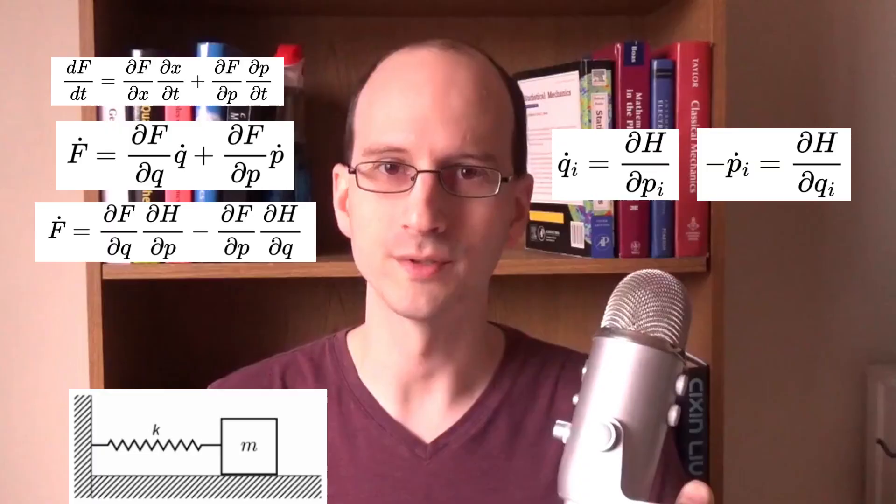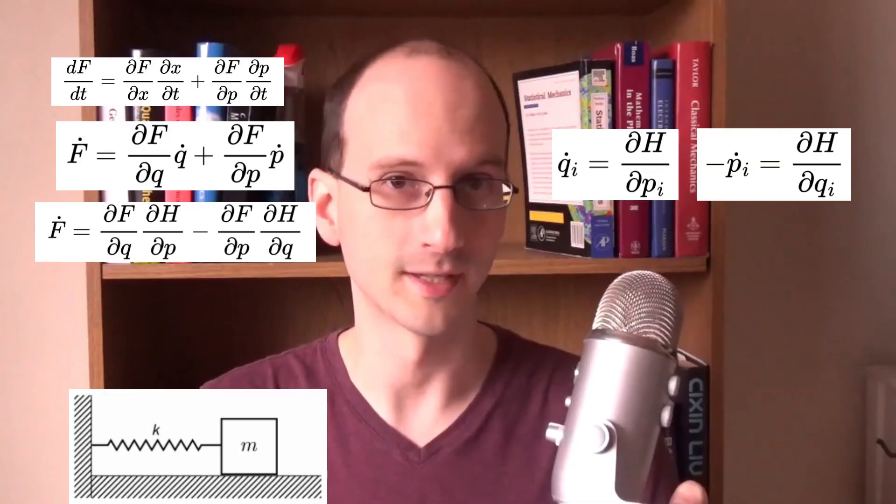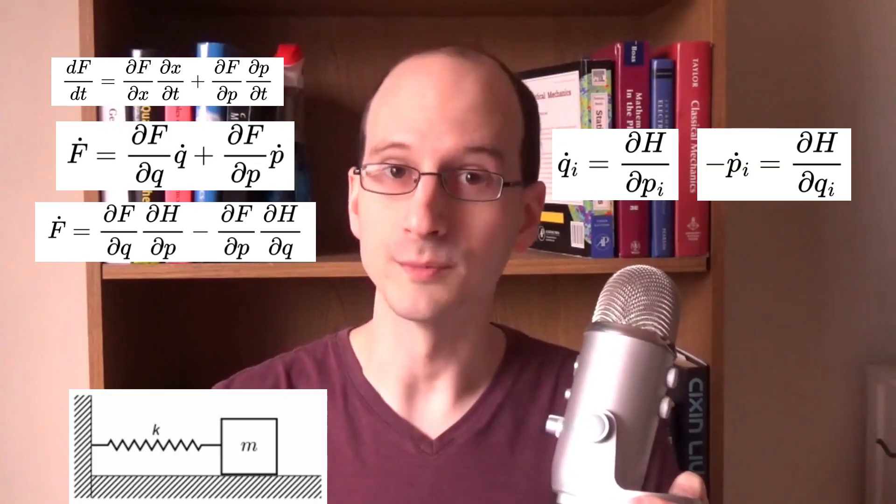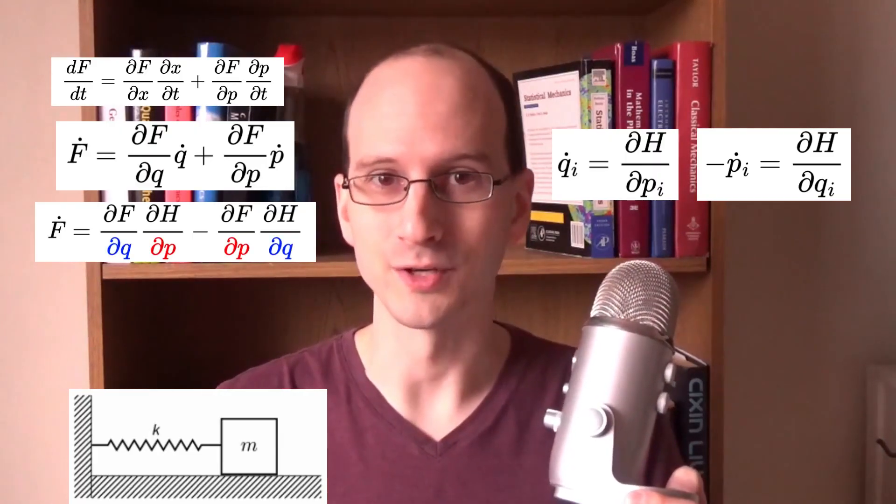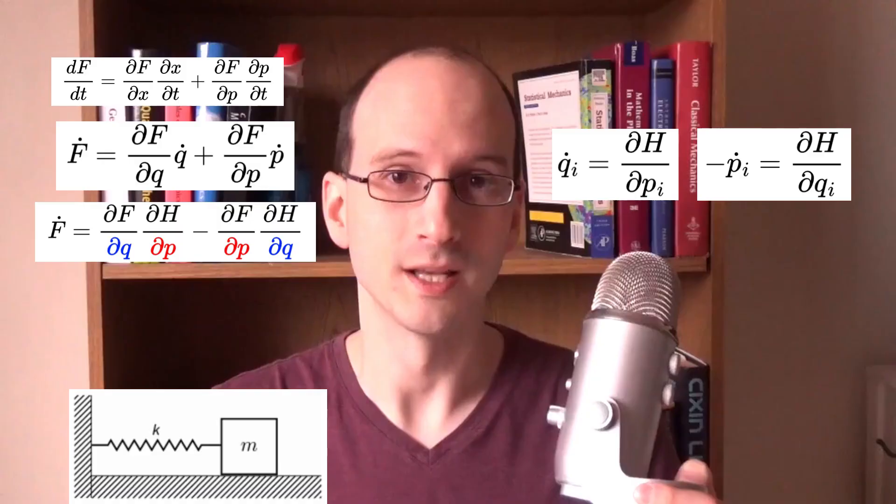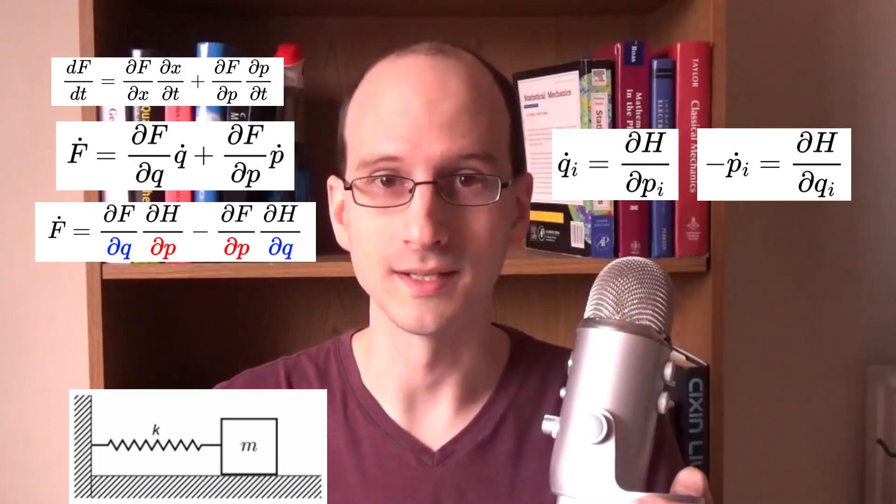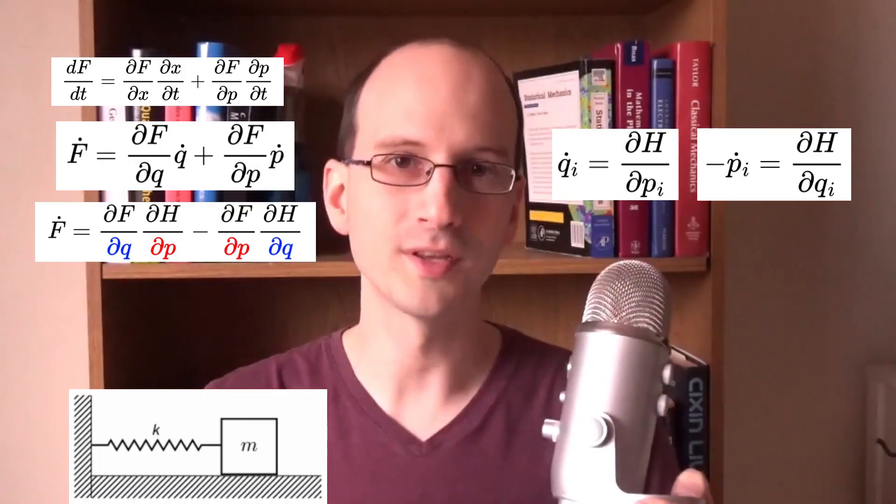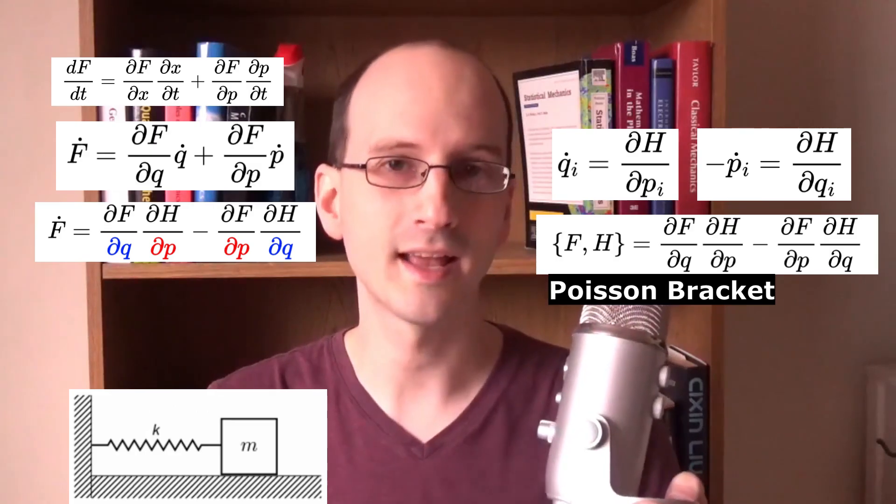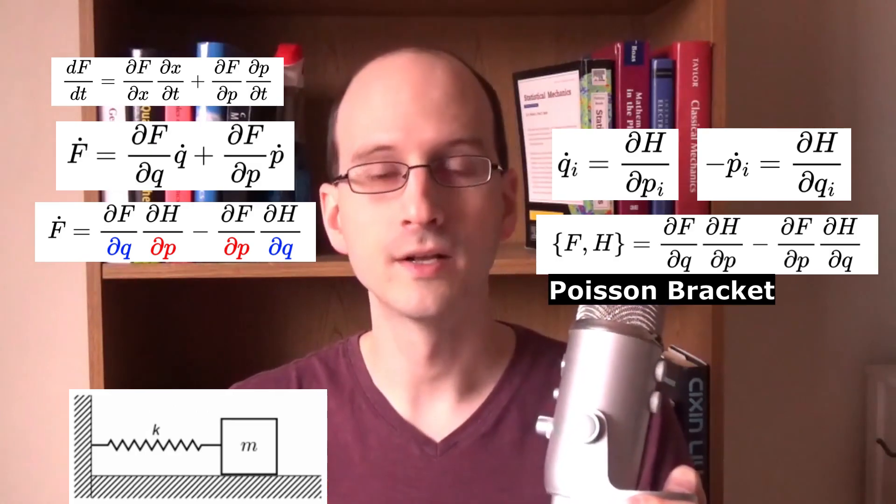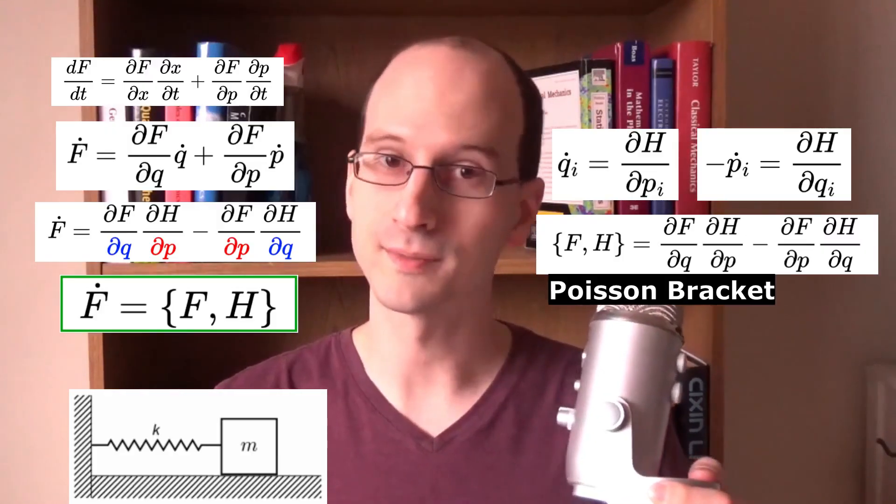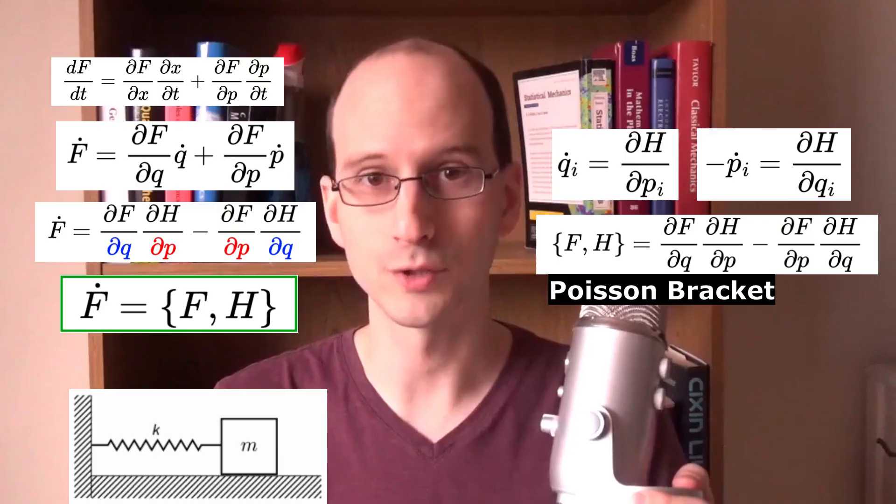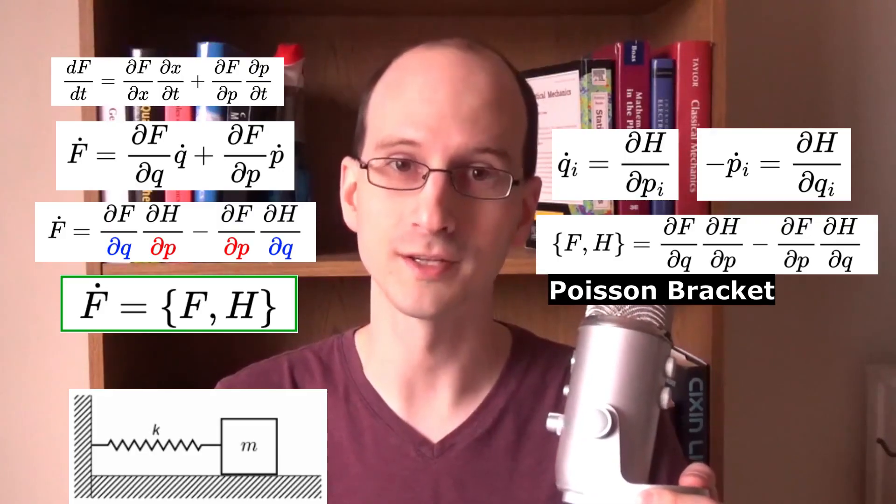Now you might think, why are we doing that? It looks more complicated, not less. But you might notice that these two terms are anti-symmetric. The only difference between them is we switch the Q and the P in the denominator. If we label this as curly bracket FH, we call it the Poisson bracket of the force with the Hamiltonian. So now we have a simple looking equation that shows us how the force is changing over time.